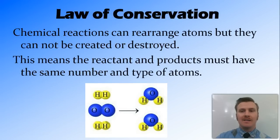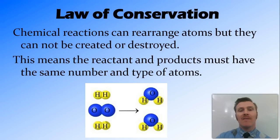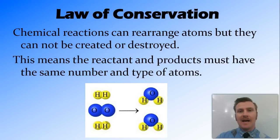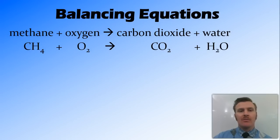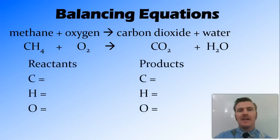The law of conservation of mass states that in chemical reactions, atoms can be rearranged but cannot be created nor destroyed. This means you need to have the same amount and type of atoms on the left hand side in the reactants as on the right hand side in the products — you can't just magic atoms into or out of nowhere. Looking at this equation for the combustion of methane, we can see there are different numbers of atoms on either side, so this equation is unbalanced and we need to balance it.